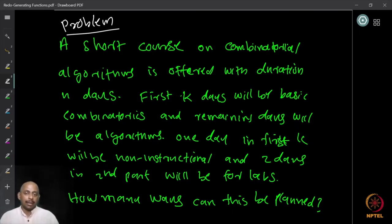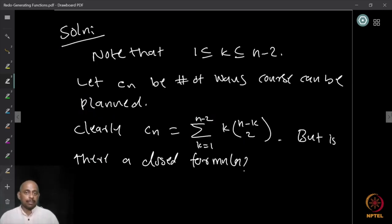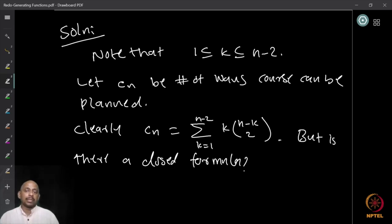We note that k must be at least 1 (since we need at least one day to choose a holiday), and k cannot be more than n−2 (since two days must be reserved for labs in the second part). So k ranges from 1 to n−2. Let c_n be the number of ways the course can be planned.